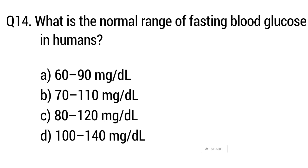Question number 14. What is the normal range of fasting blood glucose in humans? The right answer is option B: 70 to 110 mg/dL.